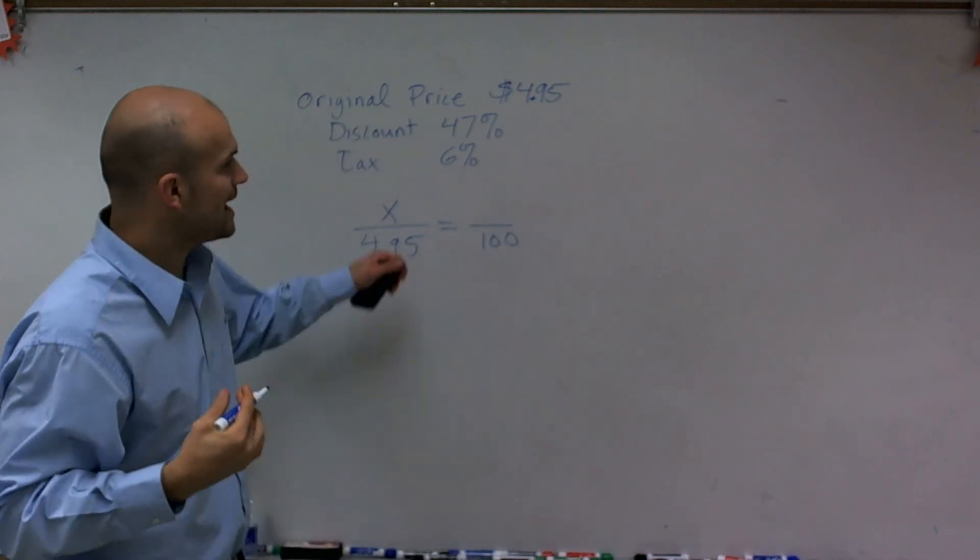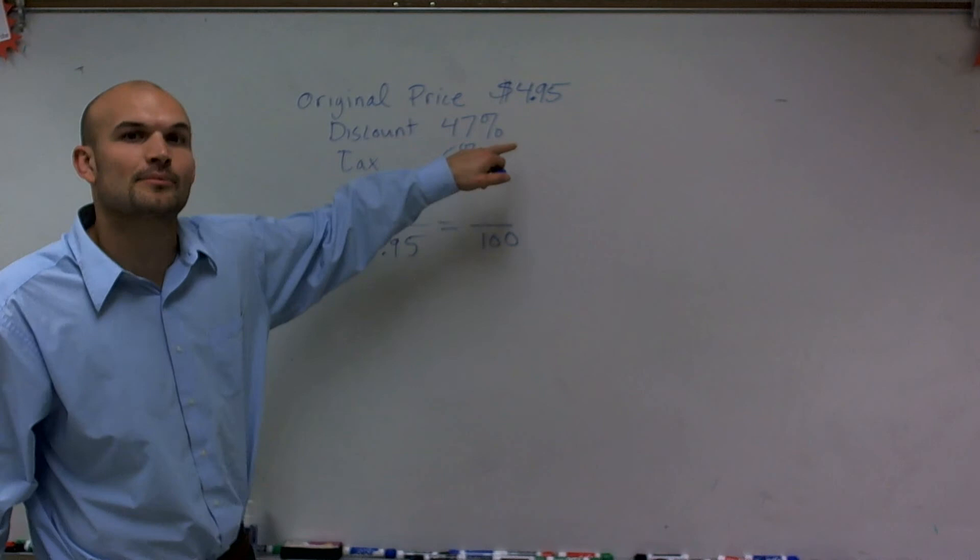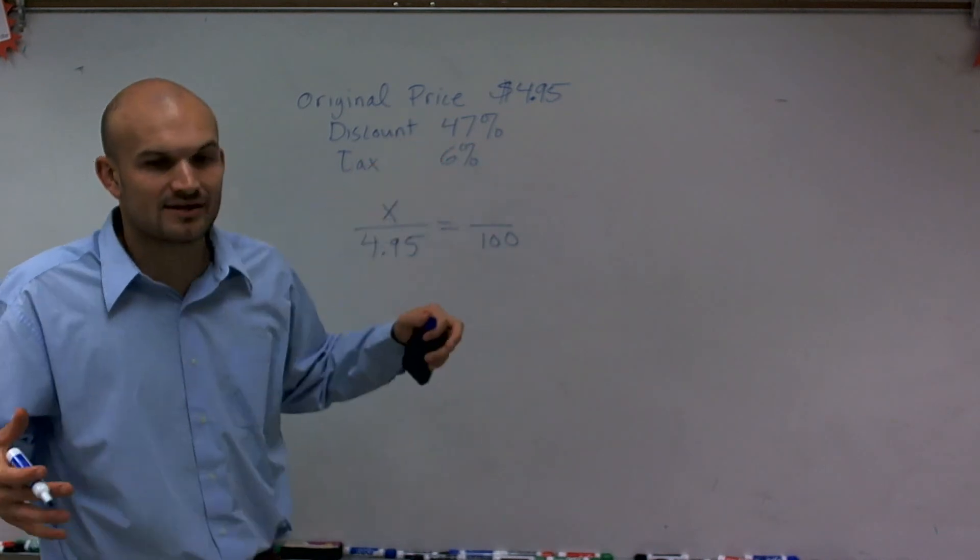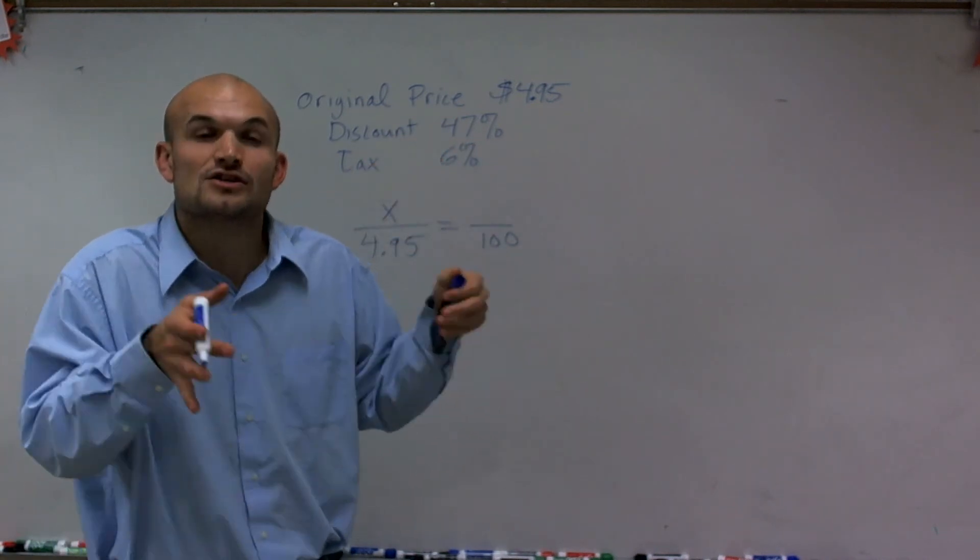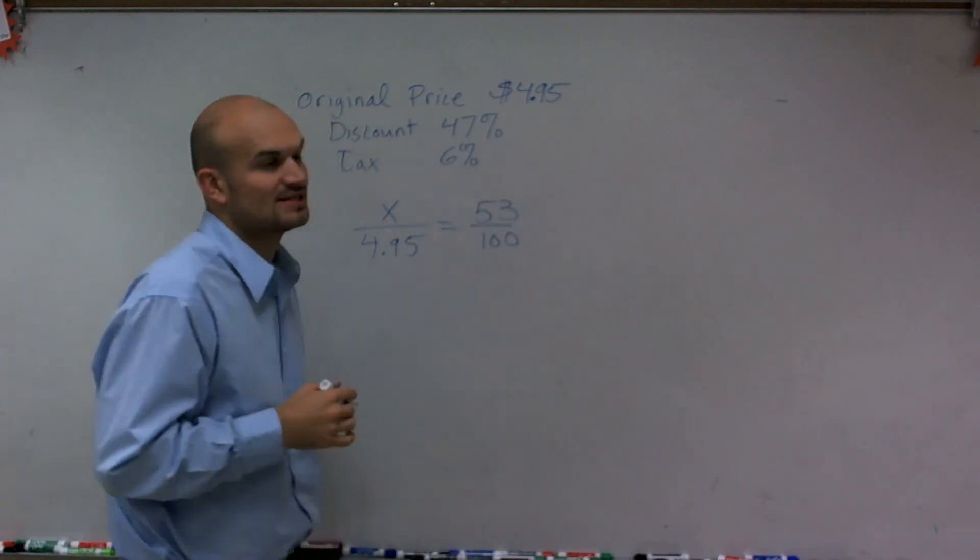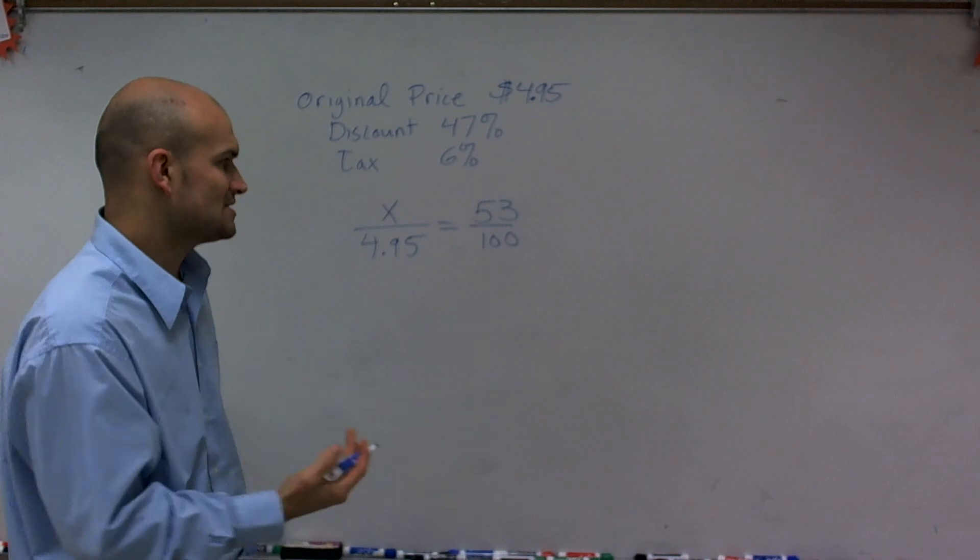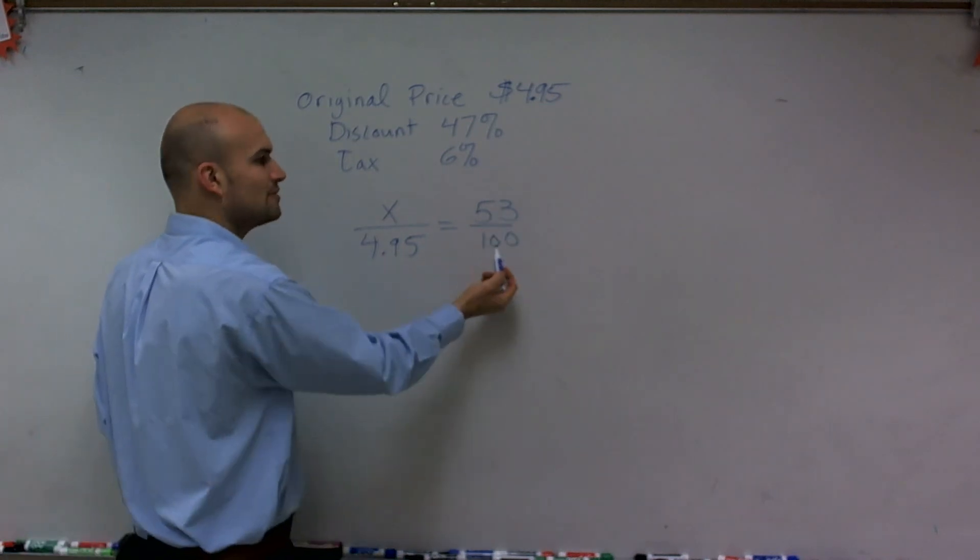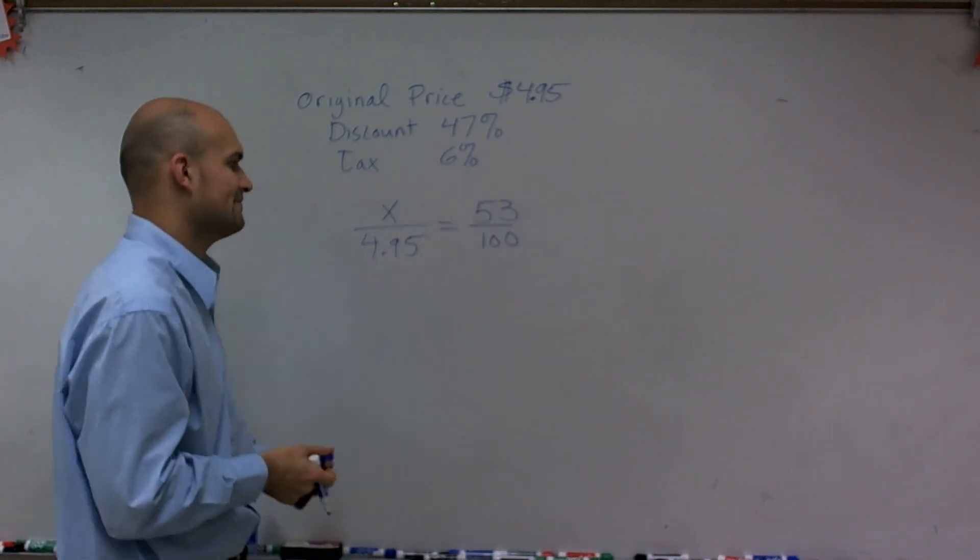Now we're not looking for the discount of 47%, because the discount is how much we're going to take off. Once we take off 47%, we're going to be left with 53% of the original price. That's why I'm going to use my proportion with 53 over 100 rather than 47 over 100.